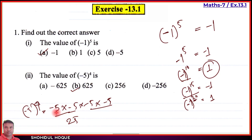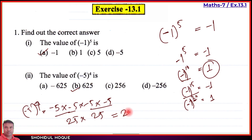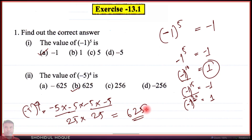25 multiplied by 25: minus × minus gives plus, so the result is positive. 25 × 25 = 625. Therefore, minus 5 to the power 4 equals positive 625.